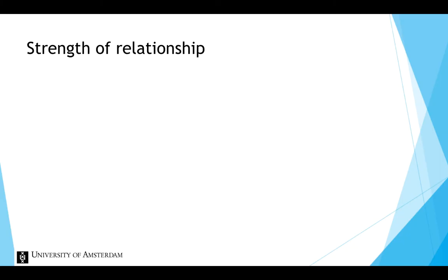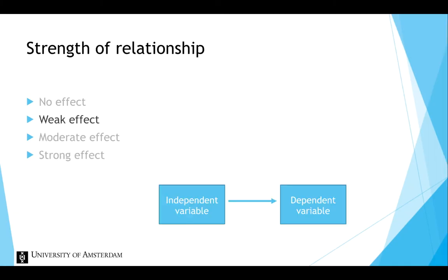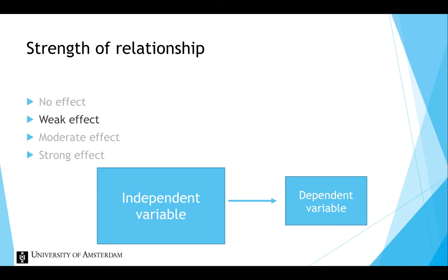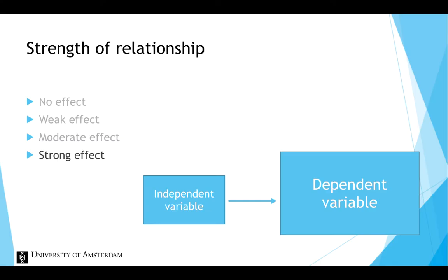The strength of a causal relationship can vary from no effect, through a weak effect, through a moderate effect, to a strong effect. A weak effect implies that a large change in the independent variable is required for only a small change in the dependent variable. On the other hand, a strong effect implies that only a small change in the independent variable is needed for a large change in the dependent variable.